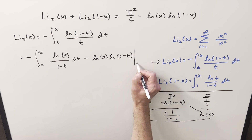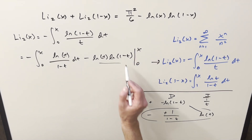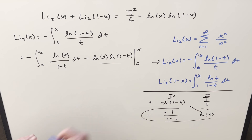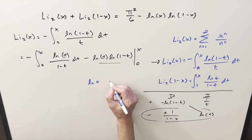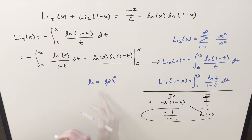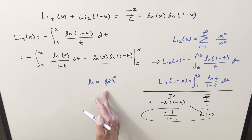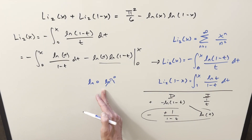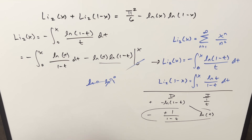We need to evaluate this from 0 to x. When we plug in 0, we're going to have ln(0) times ln(1), which is technically an indeterminate form. But if you work it out with L'Hôpital's rule, this whole thing goes to 0, so I'm not going to worry about this piece. All we need to do is plug x in.